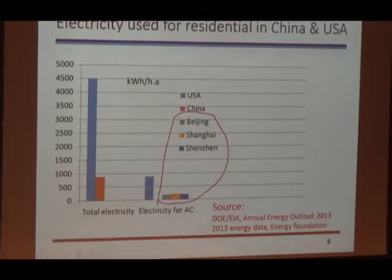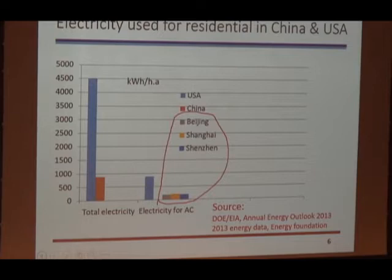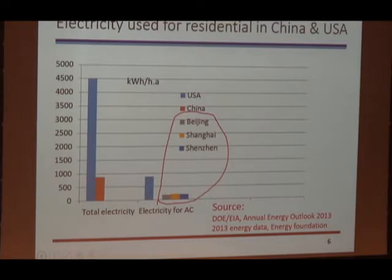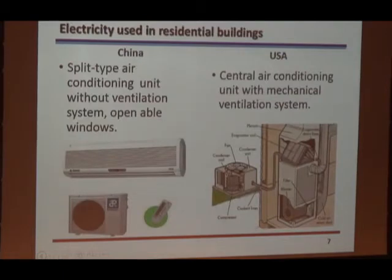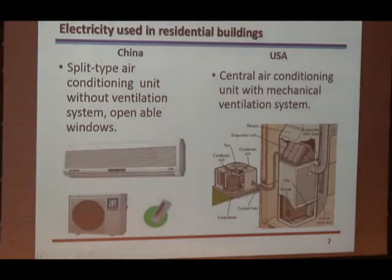If you look at the total static data, here is the total electricity used for residential buildings for families. Here is the United States, and this one is China. Here is the electricity for fans and for cooling — for the United States, and for Beijing, Shanghai, Shenzhen, all the big cities. In terms of per capita, still five times difference. Maybe one of the reasons is the different way for cooling and also the different model for ventilation.